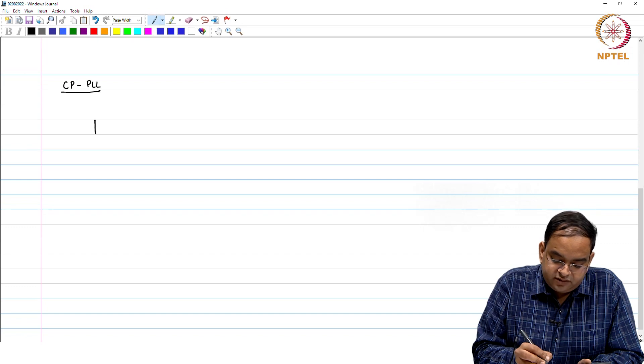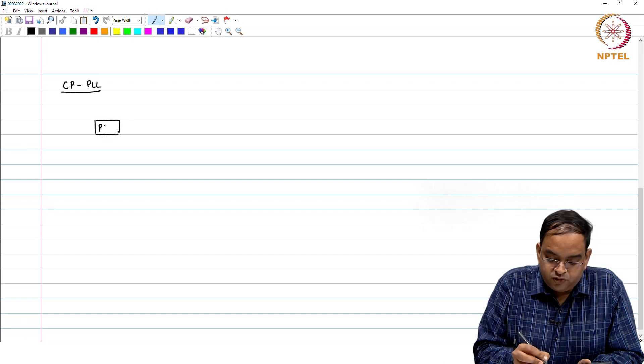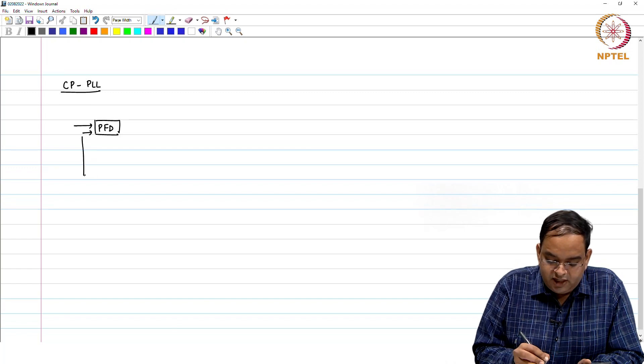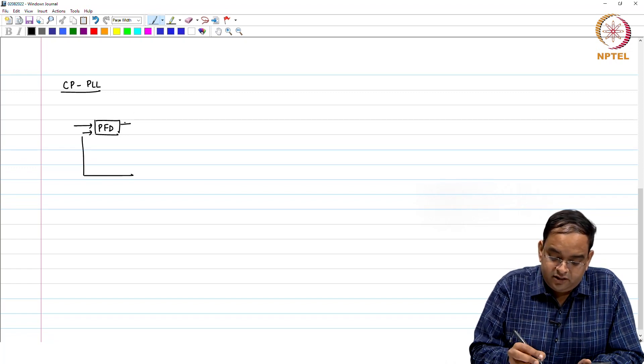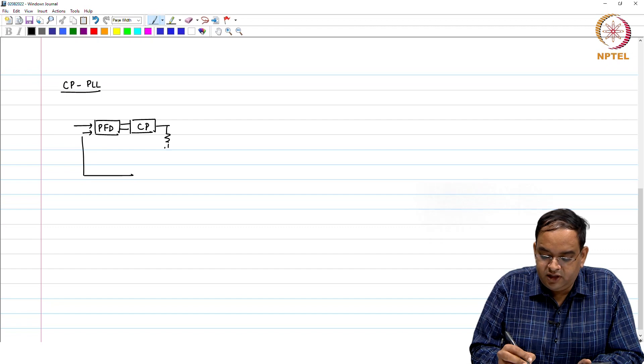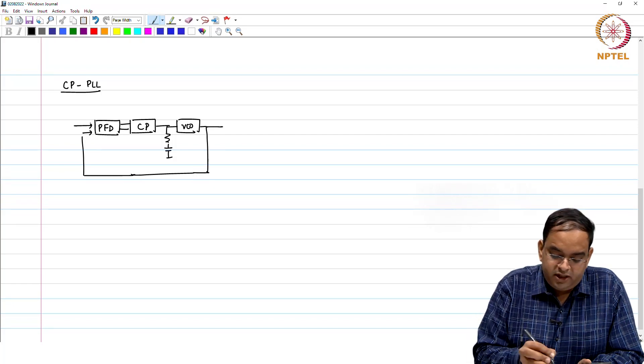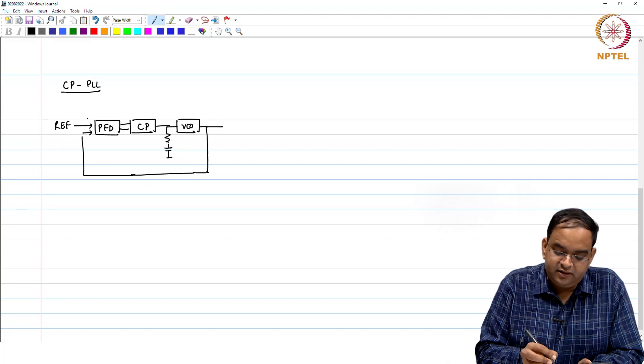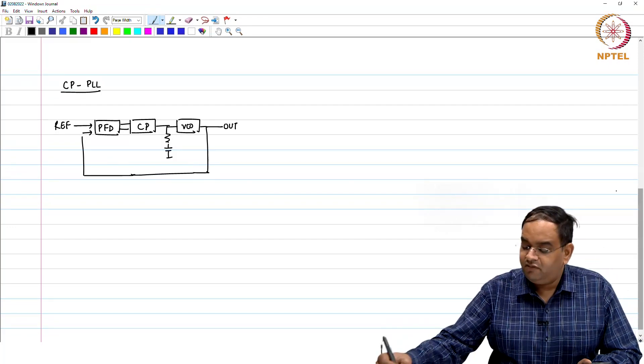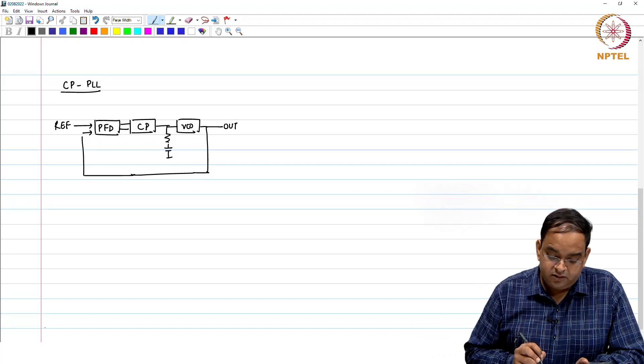The first one is again just to give you a quick block diagram which we have been studying. You have a charge pump, loop filter followed by VCO and fed it back. This is your reference and this is your output. Given the reference and the output signal for the PFD.